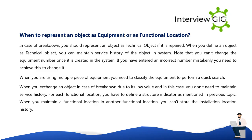In case of breakdown, you should represent an object as a technical object if it is repaired, allowing you to maintain the service history of the object. Note that you cannot change the equipment number once created; if entered incorrectly, you need to archive it to change it. When using multiple pieces of equipment, classify the equipment for quick search. When you exchange an object due to its low value in a breakdown and don't need service history, define a structure indicator for the functional location.